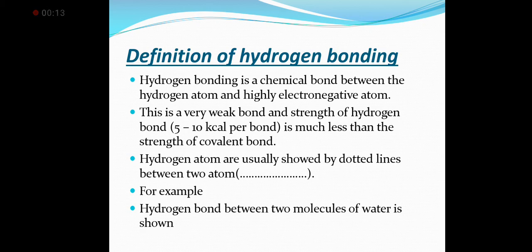What is hydrogen bonding? Hydrogen bonding is a chemical bond between a hydrogen atom and a highly electronegative atom. This is a relatively weak bond; the strength of the hydrogen bond is 5 to 10 kJ per bond, which is much less than the strength of a carbon bond. Hydrogen bonding is a chemical bond between hydrogen and an electronegative atom.